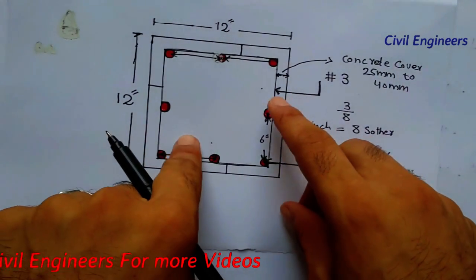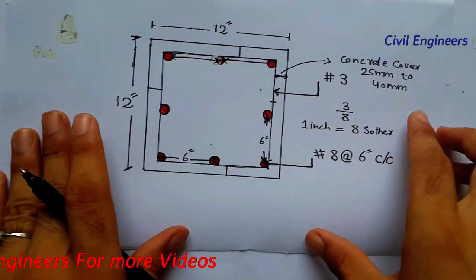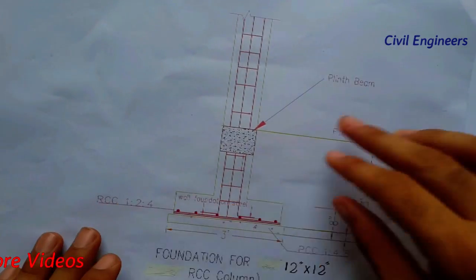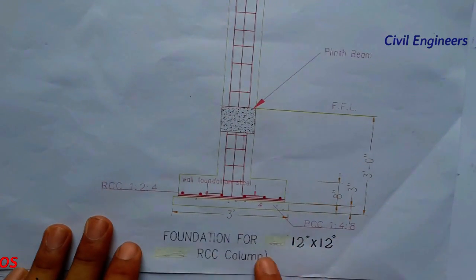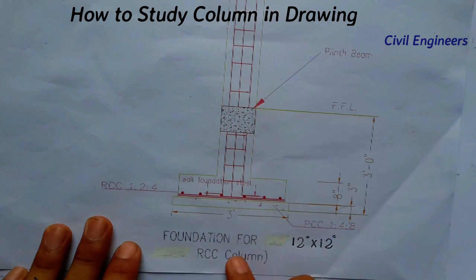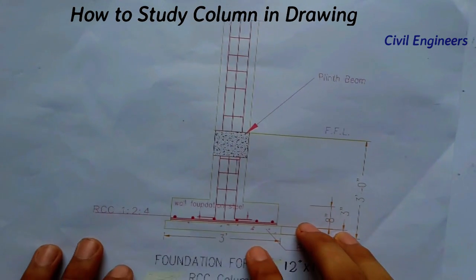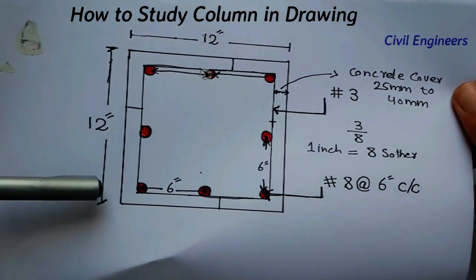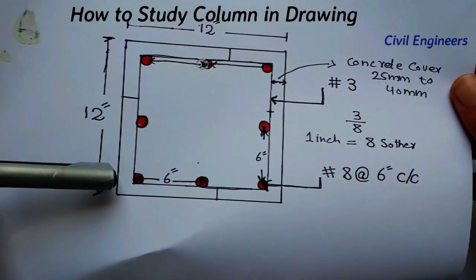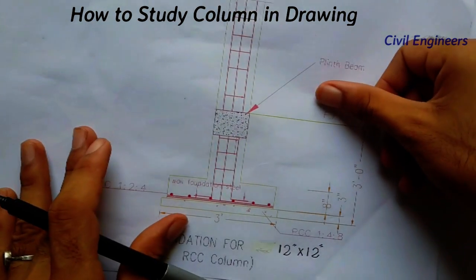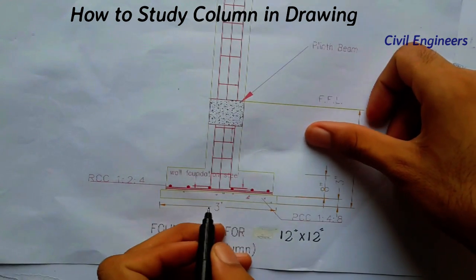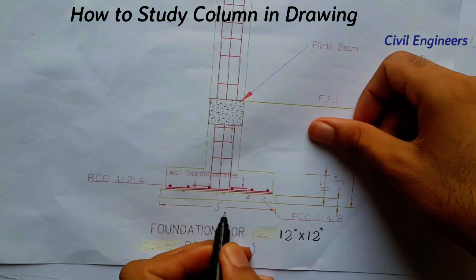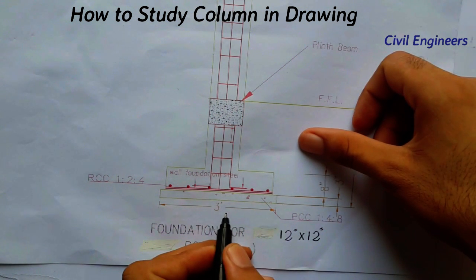Now I will show you the cross-section for this column. This is the foundation for a 12-inch by 12-inch RCC column. This is the cross-section for the foundation — the top view for the column which I have discussed. The foundation is square, meaning it is a square column.